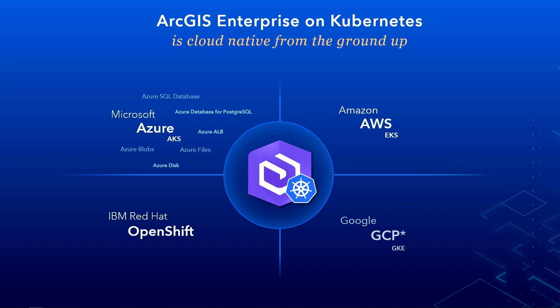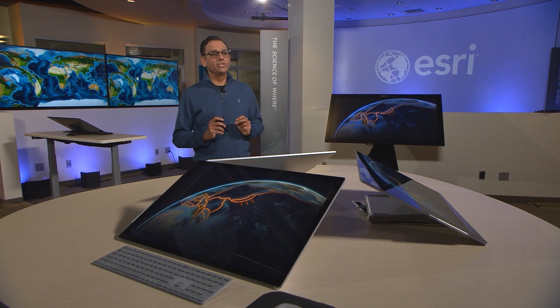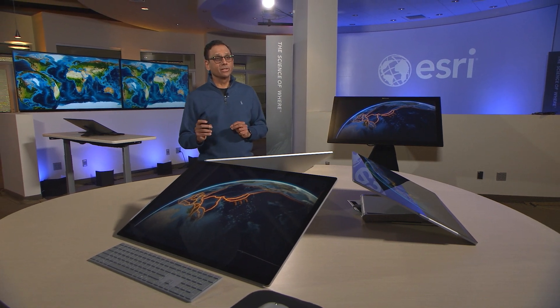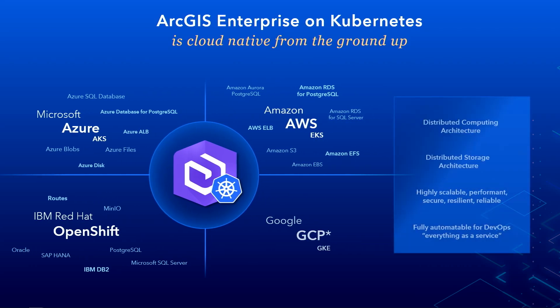Beyond the cloud-native computing aspect itself, here are some more of what you'll see in this architecture: details of how cloud-native data storage connectivity is achieved, which is very fitting for the environment that you run in. All this can be provisioned using an infrastructure-as-code pattern. This architecture is designed to meet modern DevOps expectations from architecture to operations.